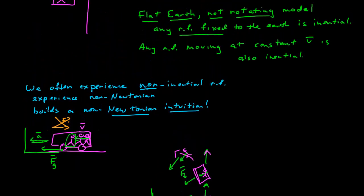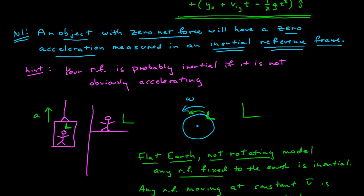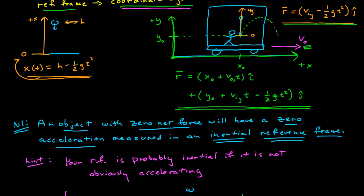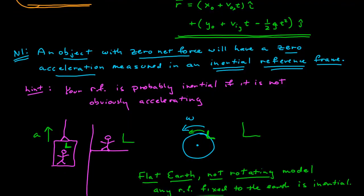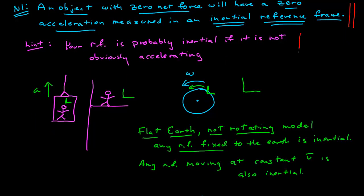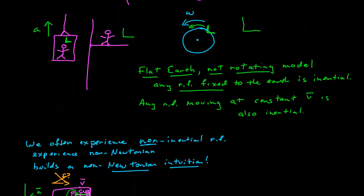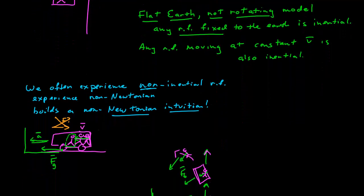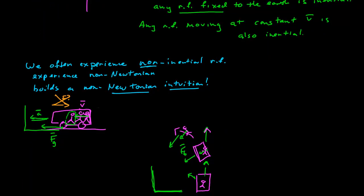So that's part of simply building your Newtonian intuition. The important thing to recognize is that when we talk about reference frames, we mean a coordinate system in which we are making measurements, and the trajectories we measure depend on those coordinate systems. Newton's laws only hold in an inertial reference frame, and as long as your reference frame is not obviously accelerating, you probably have a good inertial reference frame. Many of the experiences you've had in life through accelerating cars or rotating objects have led you to non-Newtonian experiences, so make sure you understand them in the Newtonian framework as well.